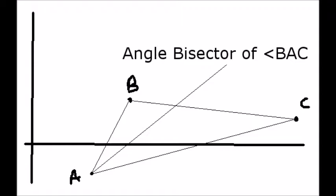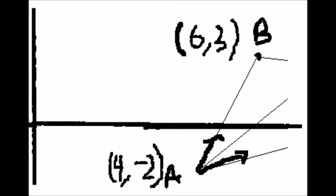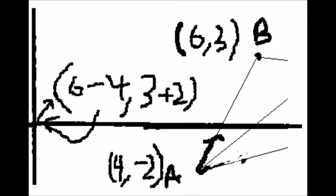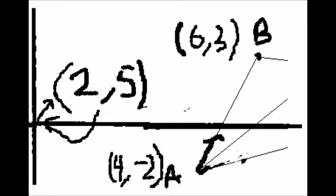The vector of the angle bisector of angle BAC is the unit vector of B minus A plus the unit vector of C minus A. This is because vectors must start from the origin, and subtracting A from B shifts this vector back to the origin, leaving us with the vector from A to B. Therefore, we have the vector from A to B to become (6-4, 3+2), or (2, 5).